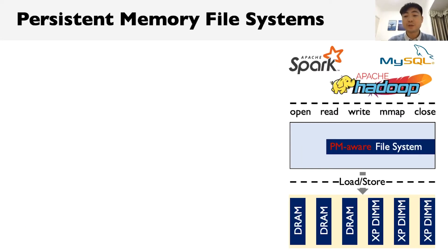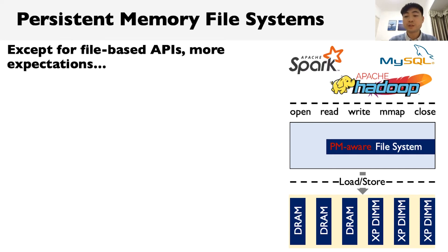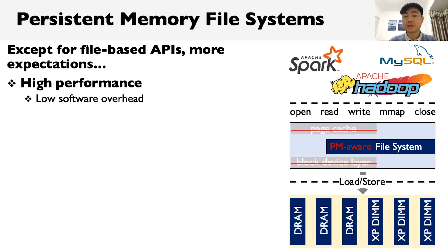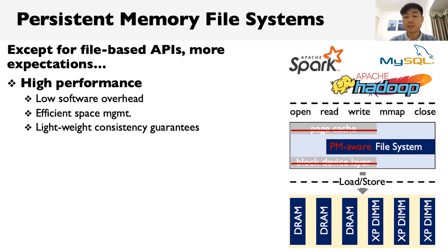A classic way of managing storage devices is using a file system, where storage space is structured into a hierarchical directory and applications can use standard APIs to access and store data. However, when using a file system to manage persistent memory, there are more factors to consider. First, a file system should be efficient, which has already been extensively studied. Prior work removed heavyweight layers in the software stack such as block device and page cache to reduce redundant memory copies, and proposed techniques such as efficient space management and lightweight consistency guarantees.